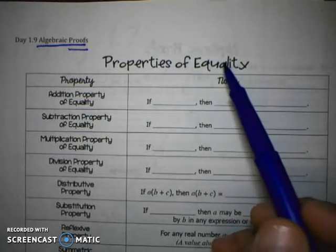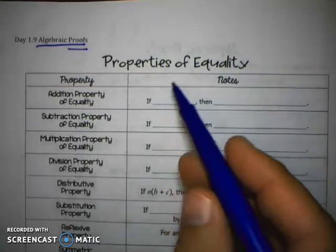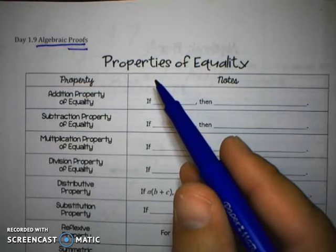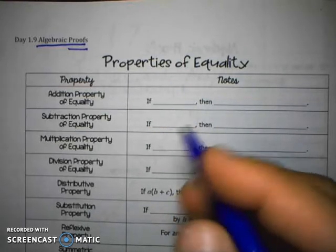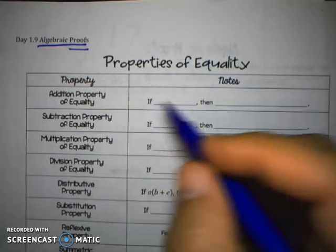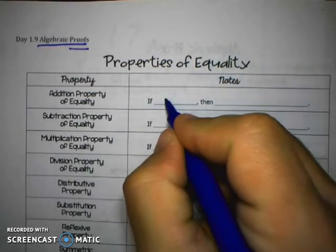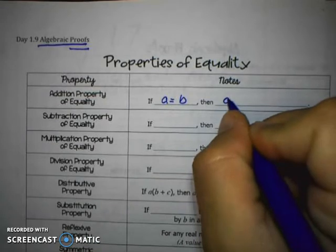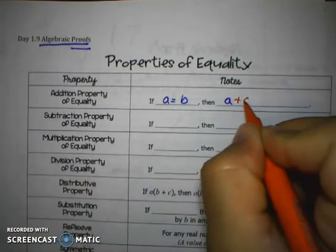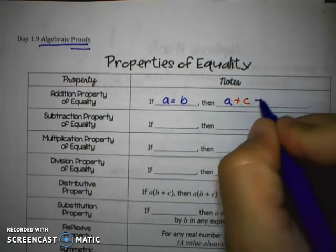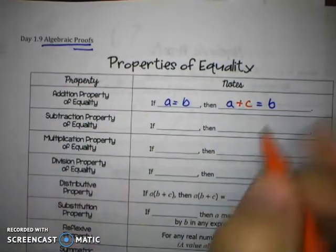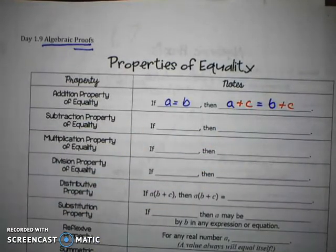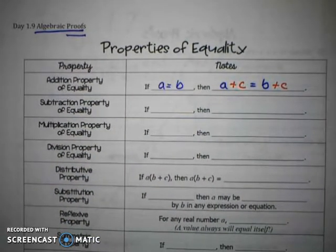The first thing we want to look at are some properties of equality. And you guys might have seen these before, but these are the properties that allow us to be able to solve equations algebraically. So we're going to start off like this. First is the addition property of equality, and it states this: If A equals B, then A plus C is equal to B plus C. And that is just basically what allows us to add the same thing to both sides of an equation.